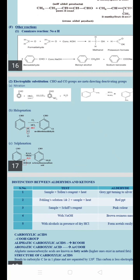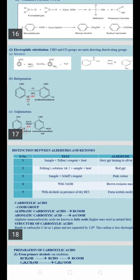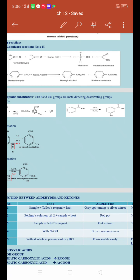Electrophilic substitution: aldehyde and keto groups are meta-directing groups, so substituents are added at the meta position. Benzaldehyde with nitric acid gives meta-nitrobenzaldehyde. Halogenation with chlorine and AlCl3 catalyst gives meta-chlorobenzaldehyde. Sulfonation with sulfuric acid and oleum gives meta-formylbenzenesulfonic acid. In all these reactions, substituents attach at the meta position.